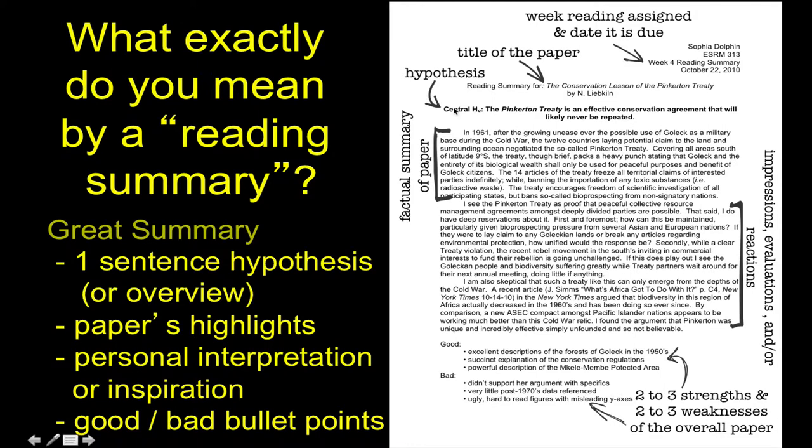Then there's a carriage return, and it has the central hypothesis, or in some cases it might not be exactly a hypothesis. In that case, it would be a central thesis. This is boiling it down to one sentence in terms of what the purpose of the paper was. Next, we go into one, or two, or three paragraphs.